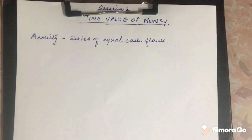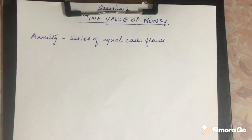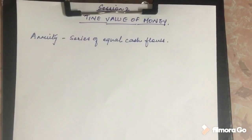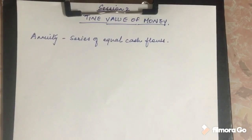Let us first understand what is an annuity. In session 1, whatever problems we did, the concept was on a single stream of cash flow — that is, a lump sum. For example, you deposit one lakh rupees now; what will this one lakh rupees become after two years at a given rate of interest? That was a lump sum — the cash inflow or outflow was at one point of time only. But in a recurring deposit at a bank, every month some amount goes in and that amount accumulates into a large lump sum in the future.